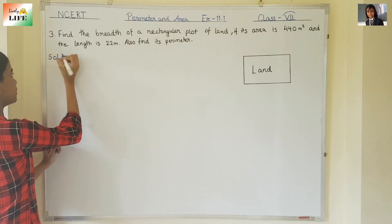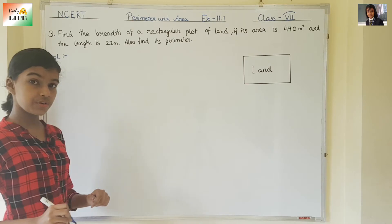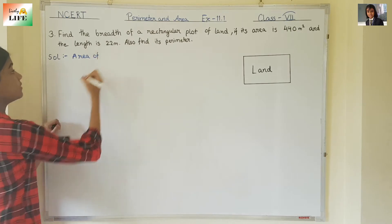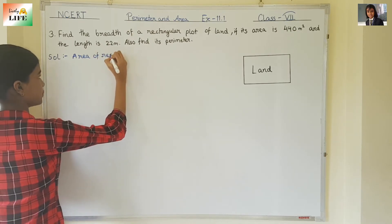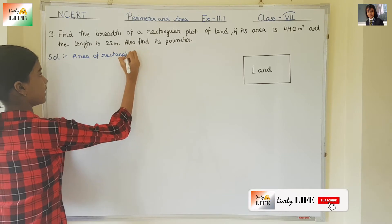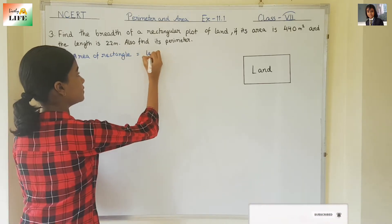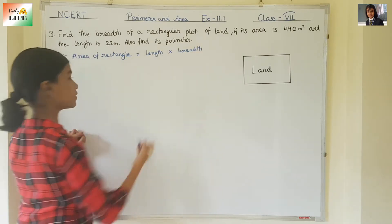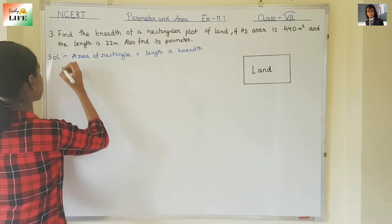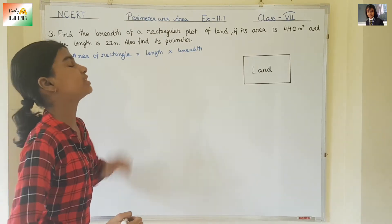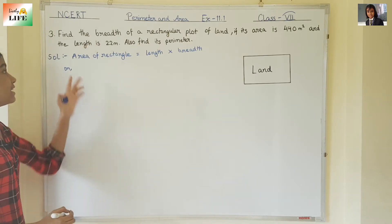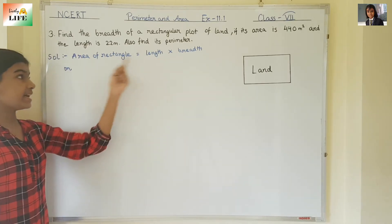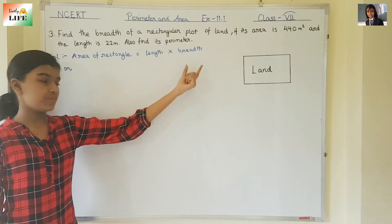So, solution. First, what are we going to do? What is the formula for the area of a rectangle? It is length into breadth. Area of rectangle is length into breadth. Now, what will be the breadth of the rectangle? We need to find the breadth. If area of rectangle is length into breadth, then breadth will be area divided by length.